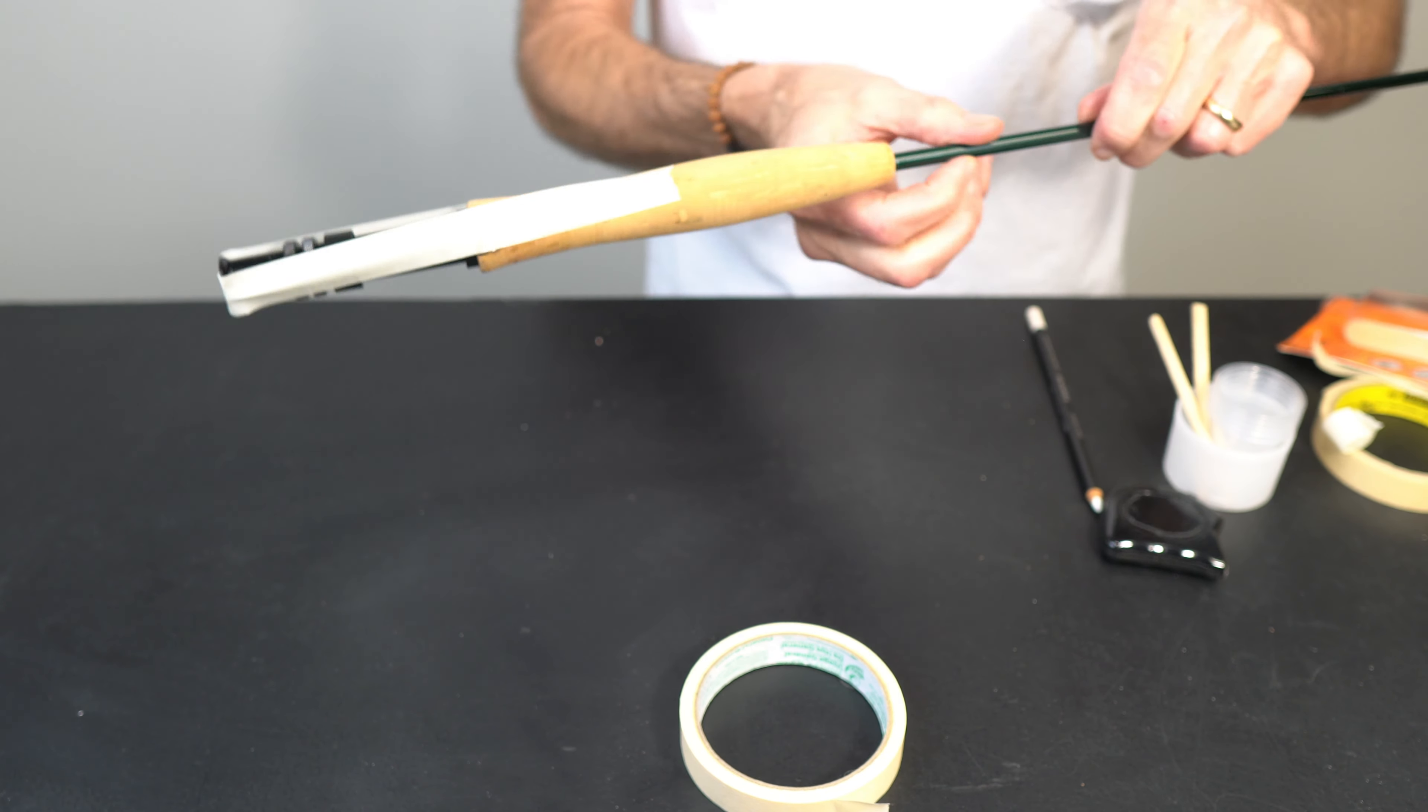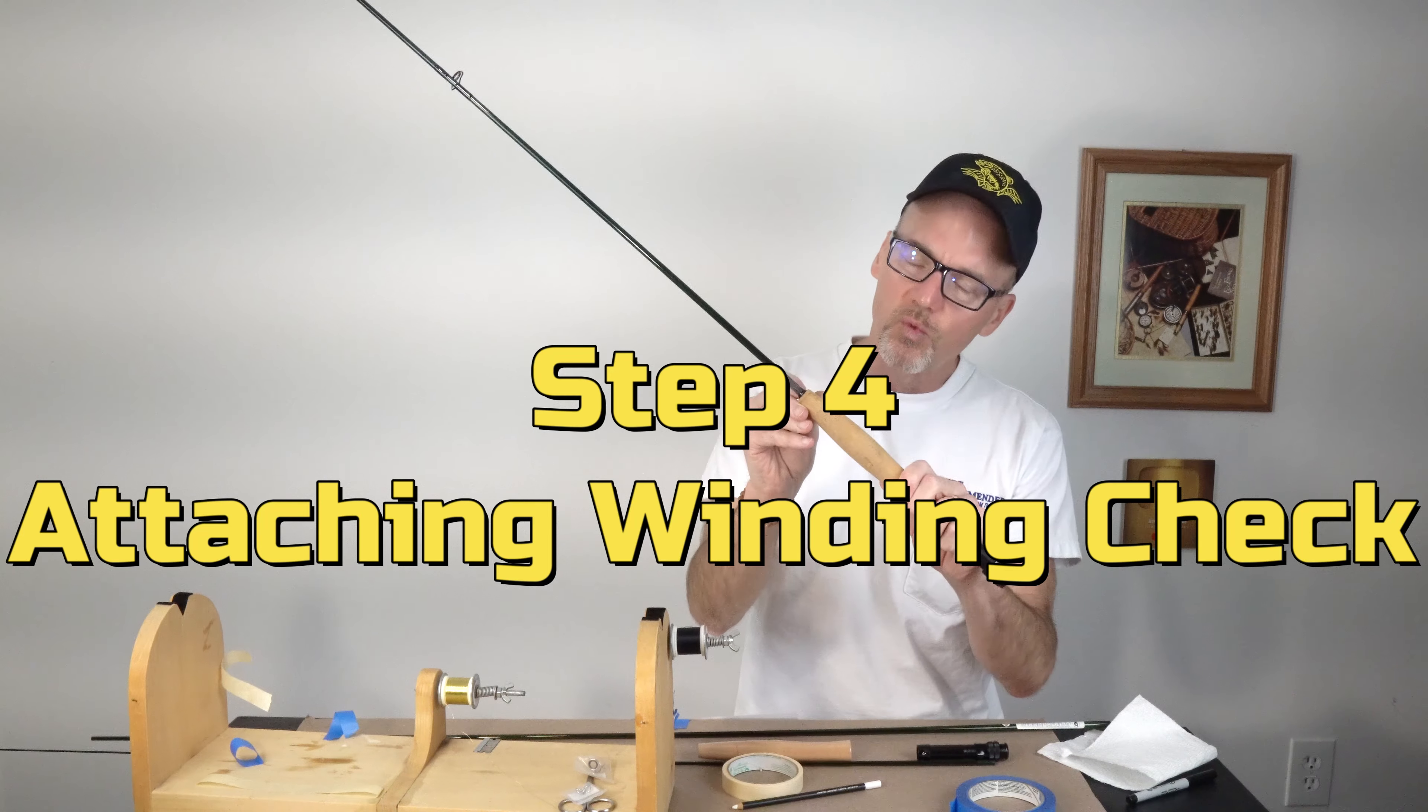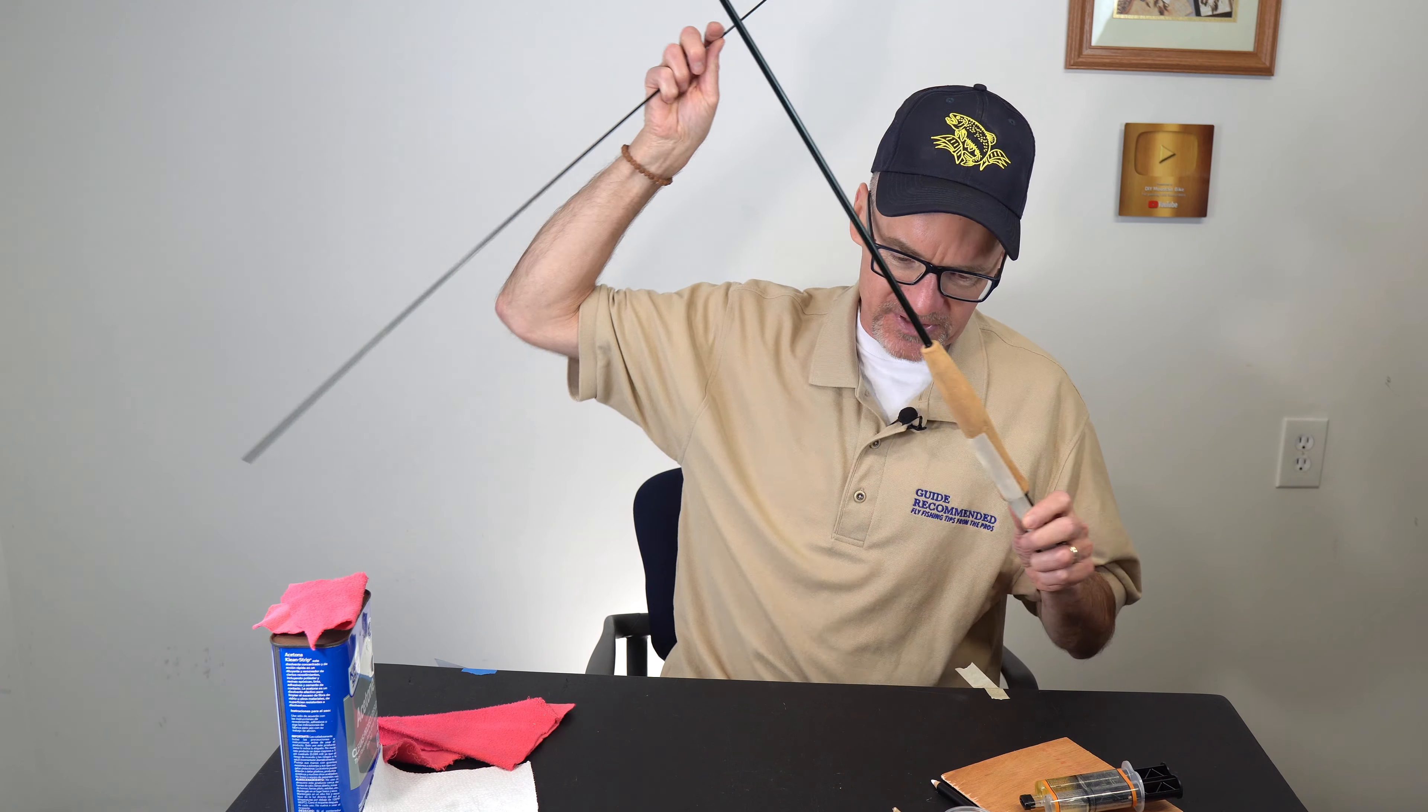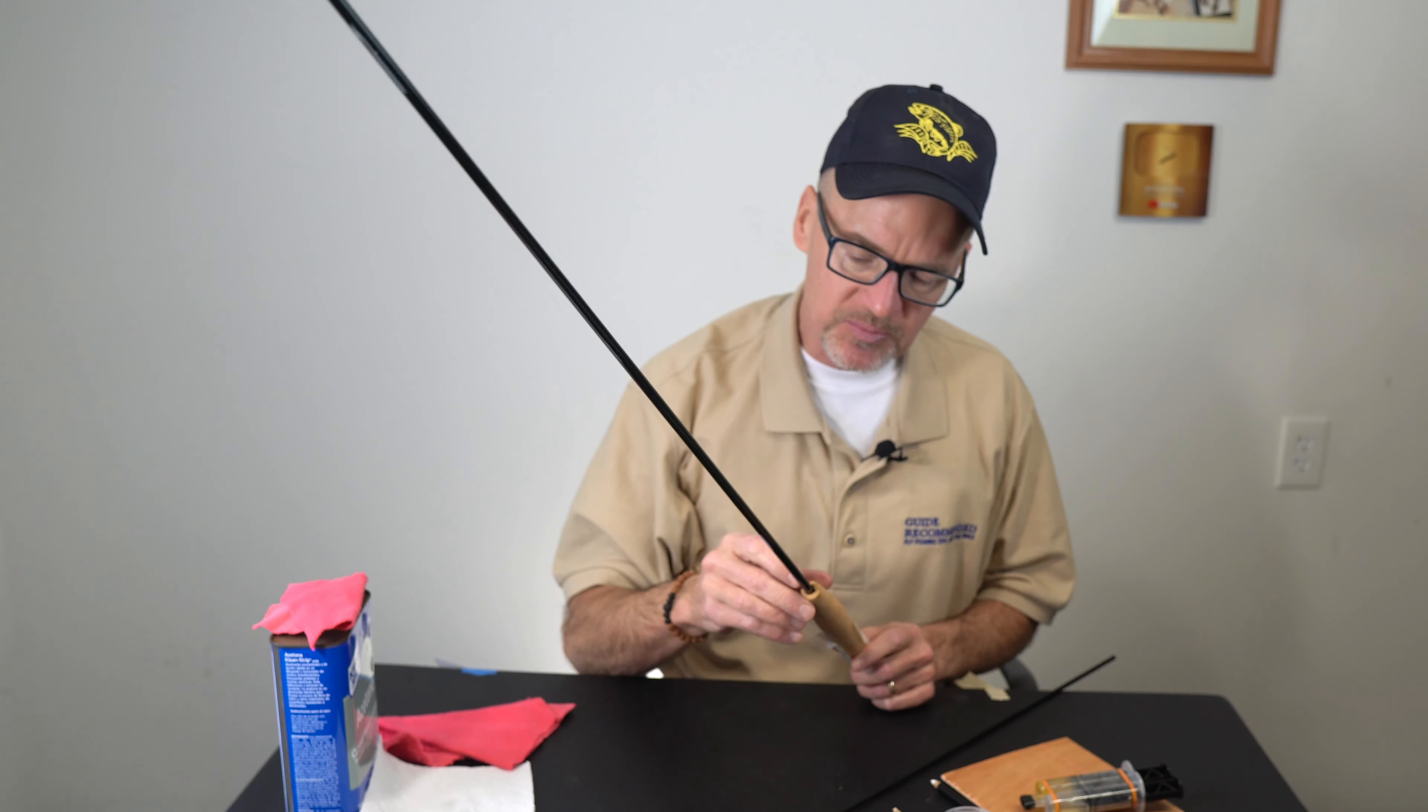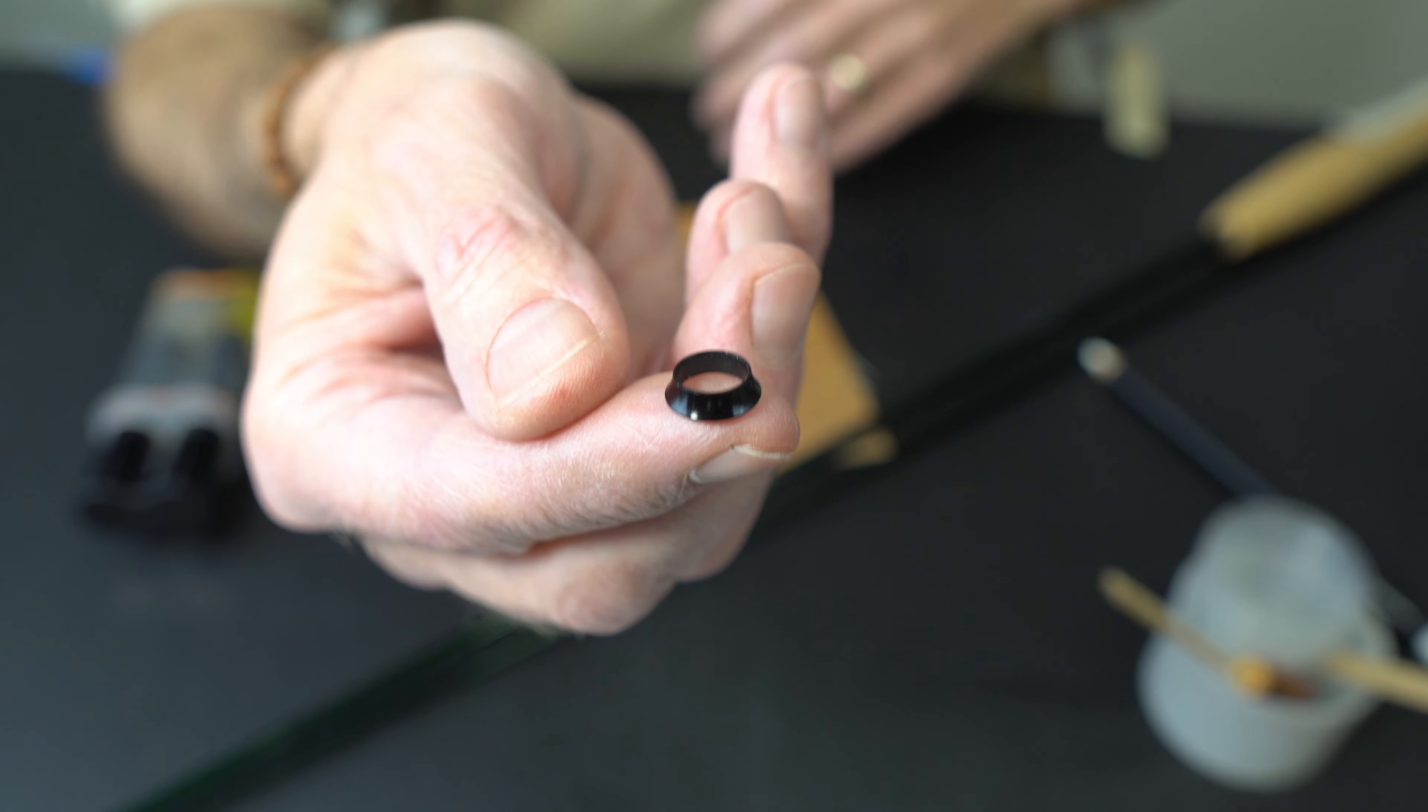Step four: with your grip in place you're going to attach your winding check. I think what we got is the most stressful part done. We got our reel seat is on, our end cap is on, our grip is on. Now it's time to put on our winding check.